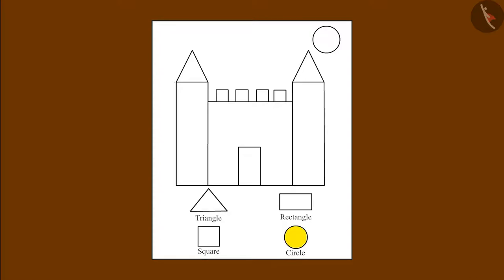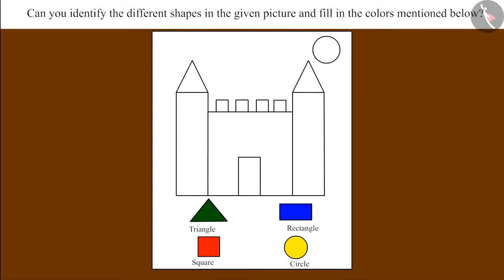Such as yellow color in circle, blue color in rectangle, red color in square and green color in triangle. So, children, now all the circles in this picture have to be filled with yellow color. Can you identify the circle in this picture?